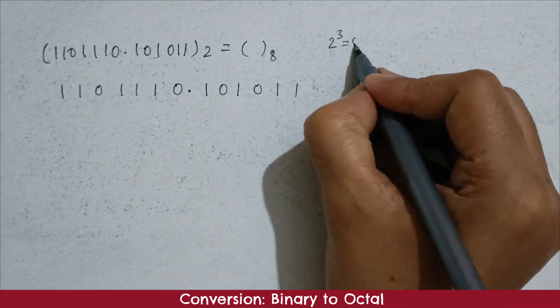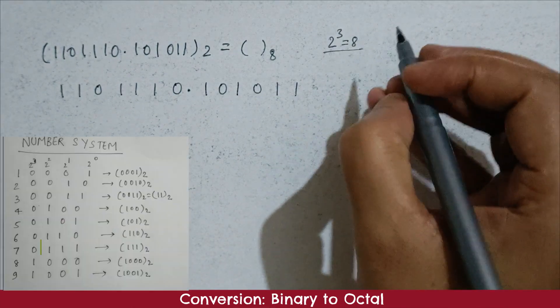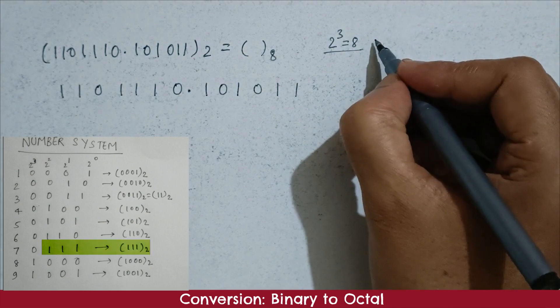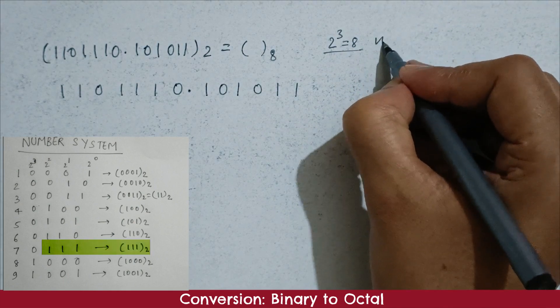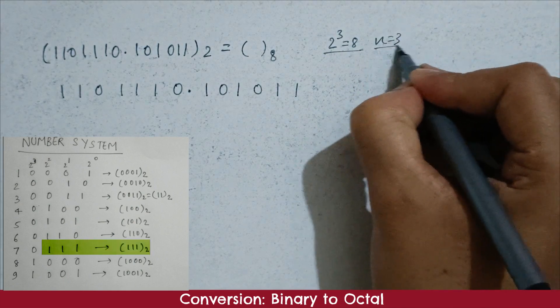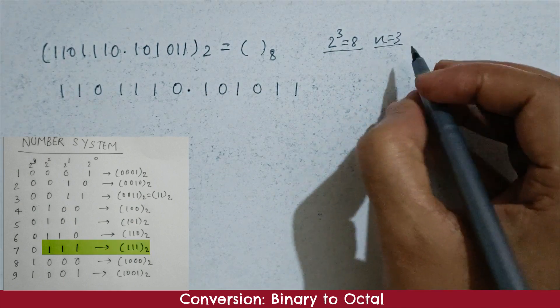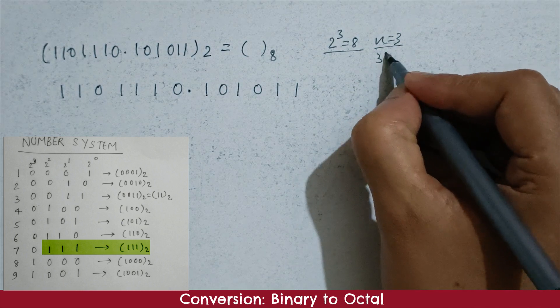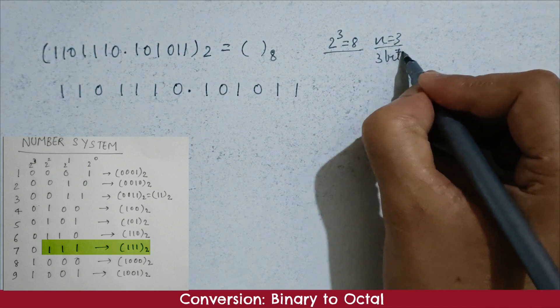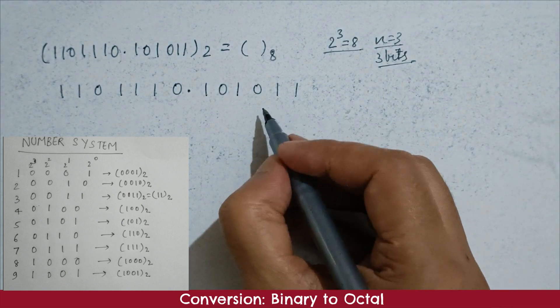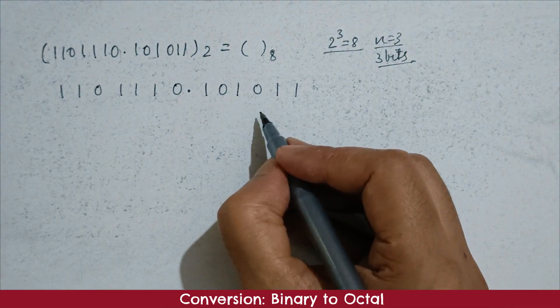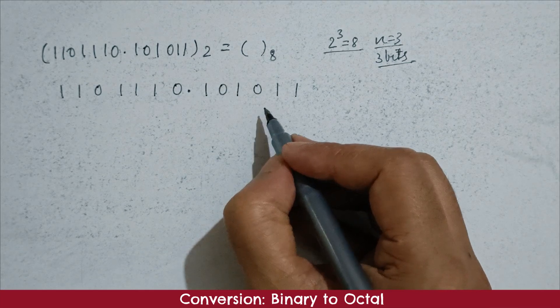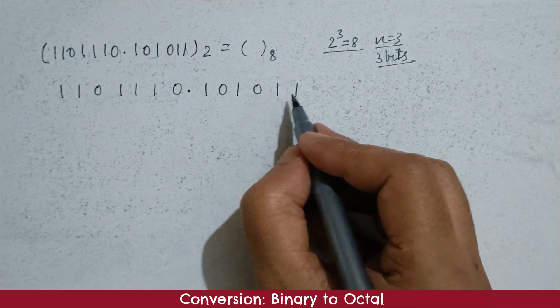So here we know we can represent octal using digits 0 to 7. And in the binary conversion table, we use up to 3 bits for representation from 0 to 7. So we will group the number into groups of 3 bits.